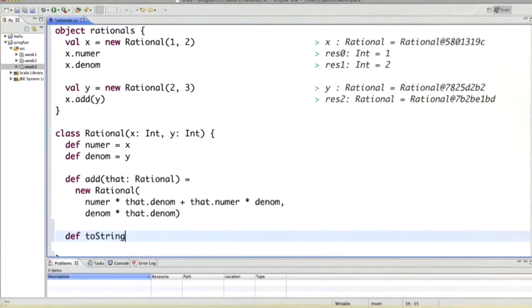We change that by adding a toString function to the class. The toString function will be called whenever an element of the class should be printed. So what would toString be? Well, one thing to do would be to say it's numer plus the slash plus denom, where the plus is string concatenation.